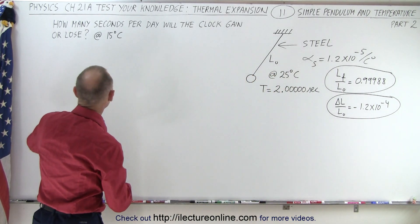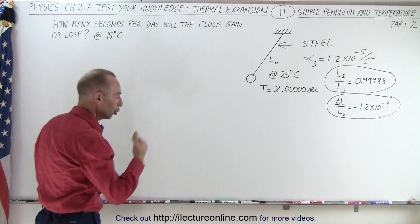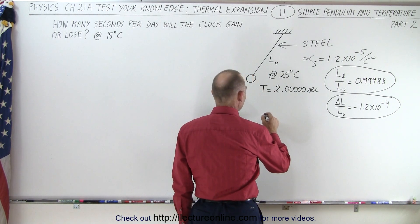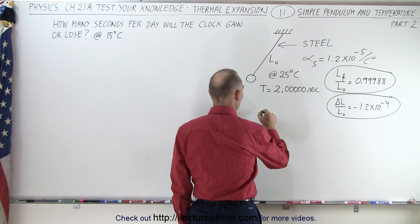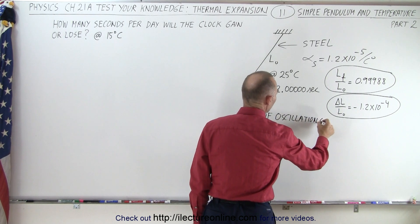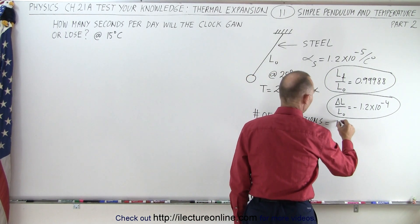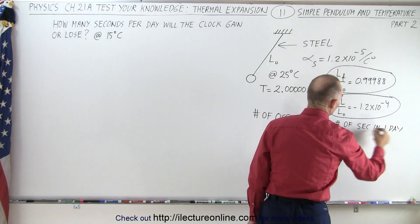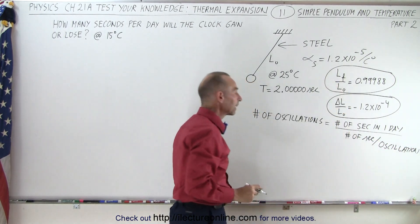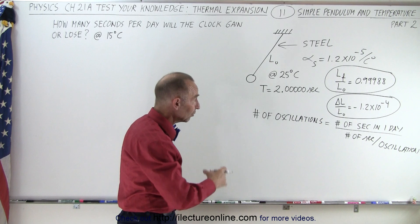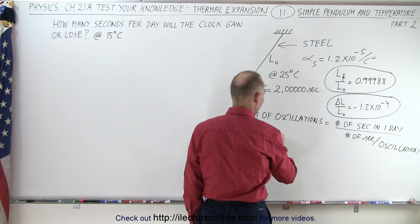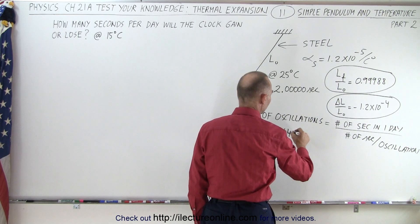So now we're asked to find how many seconds per day the clock will gain or lose. The number of oscillations of the pendulum equals the number of seconds in a day divided by the number of seconds per oscillation. The number of seconds in a day is 86,400 seconds.